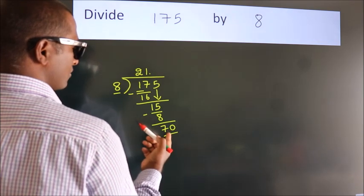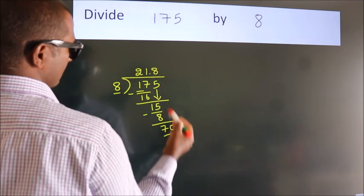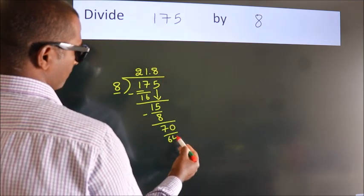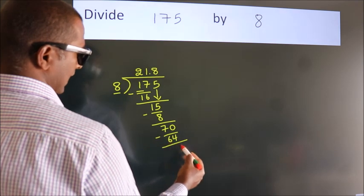A number close to 70 in the 8 table is 8 times 8 equals 64. Now we subtract. We get 6.